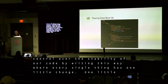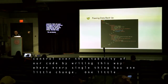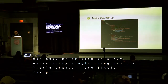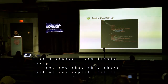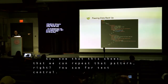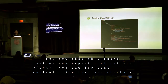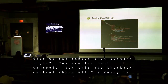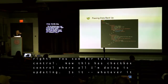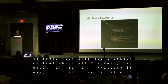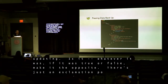Now that we can repeat this pattern — you saw it for TextControl, now there's CheckboxControl where all I'm doing is updating: if it was true or false, make it the opposite, just an exclamation point in front of the same value. If you look in my slides you'll be able to click through to get the code.